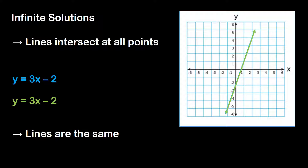Notice, the only criteria for having a system of linear equations was to have two linear equations. We didn't say whether or not they had to be the same equations or different equations, as long as they were two linear equations. So technically this still satisfies the definition. If the lines are the same, they intersect at all points because they are on top of each other, and that means you have an infinite number of solutions.